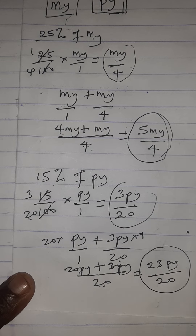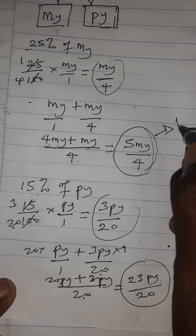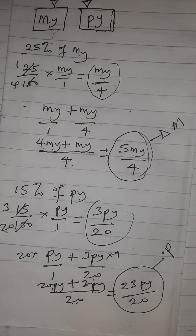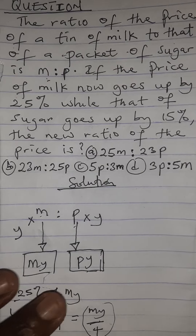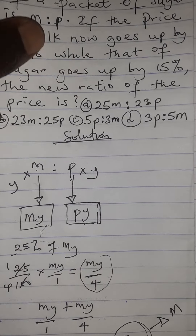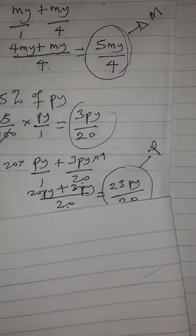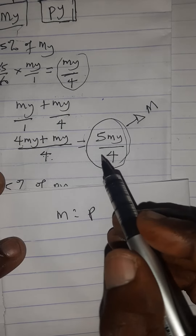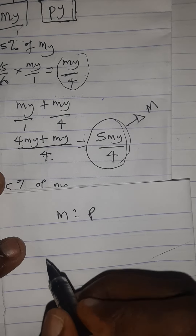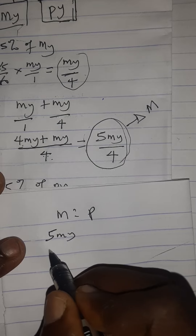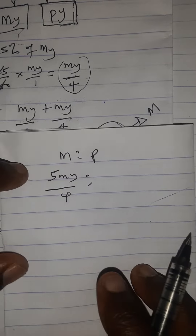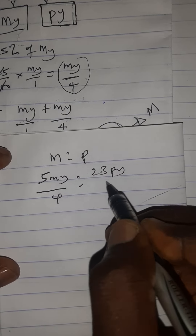Now that we have the new values — milk is 5my/4 and sugar is 23py/20 — we find the new ratio of price, which is still milk to sugar. So the new ratio is 5my/4 to 23py/20.